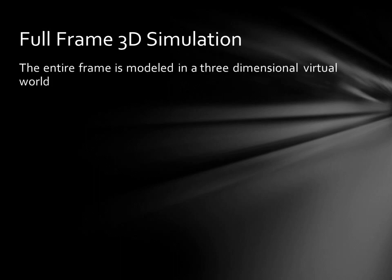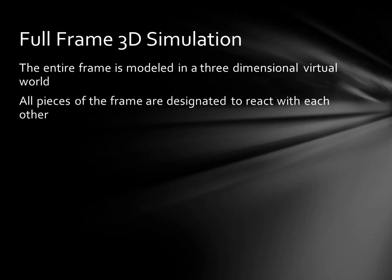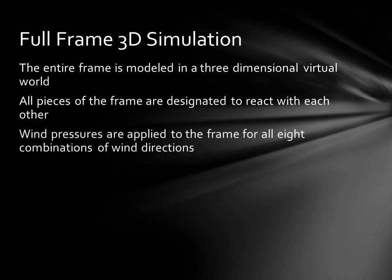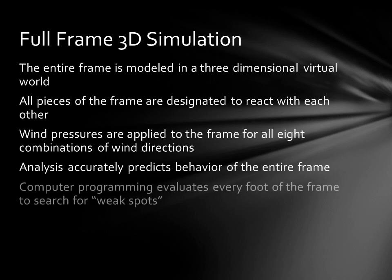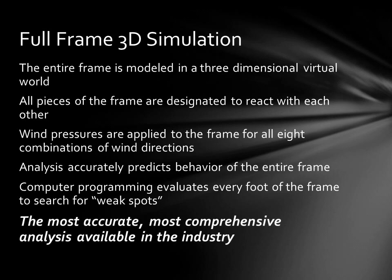The full frame 3D simulation method models the entire frame in a three-dimensional virtual world. All pieces of the frame are designated to interact with each other, and wind pressures are applied to the entire frame for all eight combinations of wind directions. The analysis accurately predicts the behavior of the entire frame in hurricane force winds, and then computer programming evaluates every foot of the entire frame to search for weak spots. This is the most accurate, most comprehensive analysis available in the industry today.